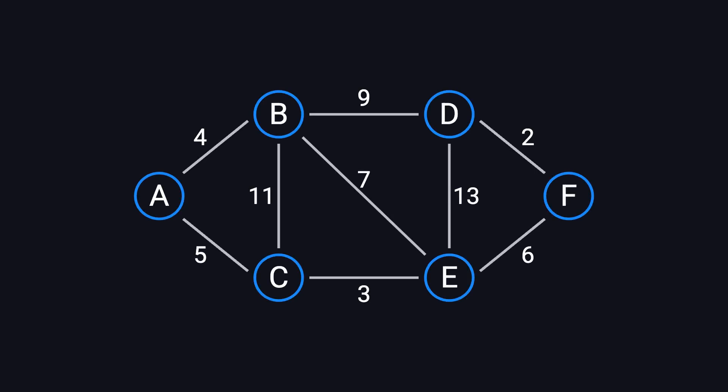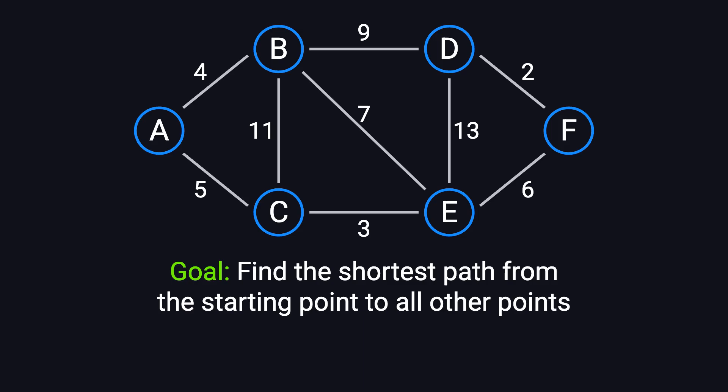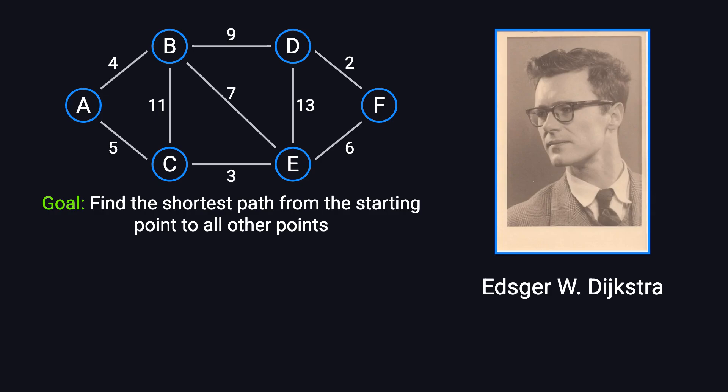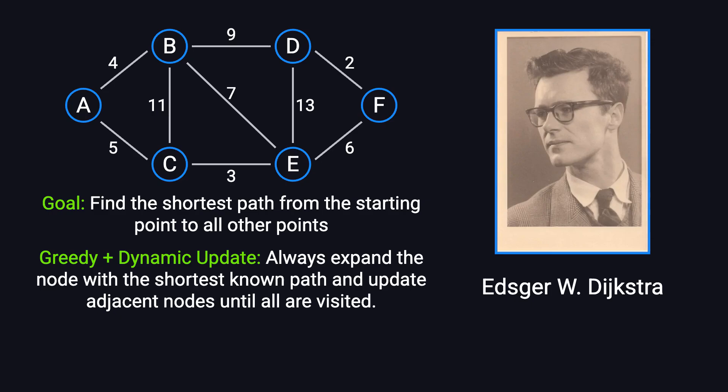Before we dive into the Bellman-Ford algorithm, let's take a moment to revisit the shortest path problem. This is one of the fundamental challenges in graph theory, and you might remember that Dijkstra's algorithm is one of the most efficient ways to solve it. This method follows a greedy approach with dynamic updates, always expanding the node with the shortest known distance and refining shortest paths to its neighbors until all nodes have been processed. If you're curious to learn more about Dijkstra's algorithm, be sure to check out our other videos on this topic.